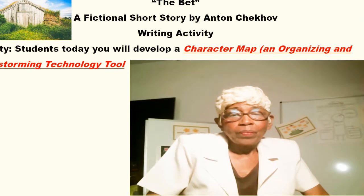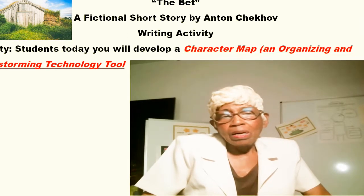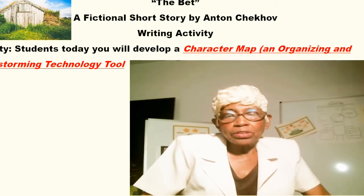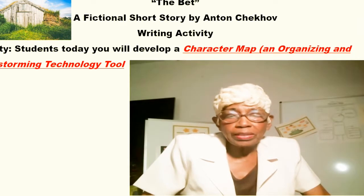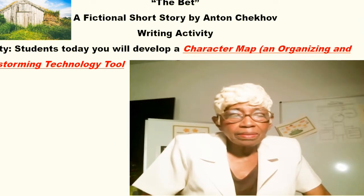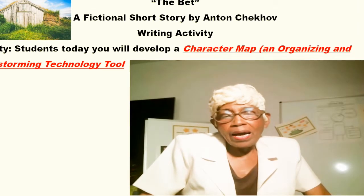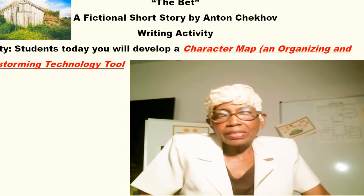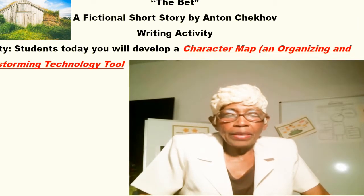The character map is an organizing and brainstorming tool. It helps you to look at things and see how they are. Some of the things you are going to look at on the character map are what the character may look like, and how the lawyer acts or how the banker acts — whichever one you choose. You can read the story either on the online digital library CommonLit.org, or every student has a PDF copy available.